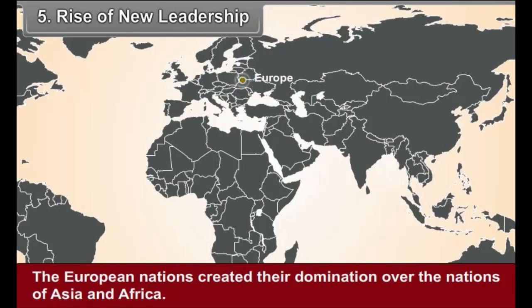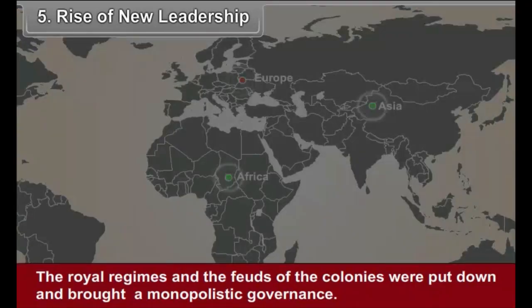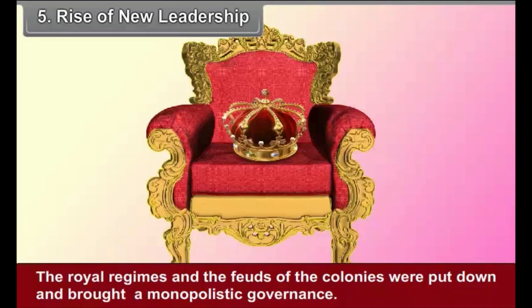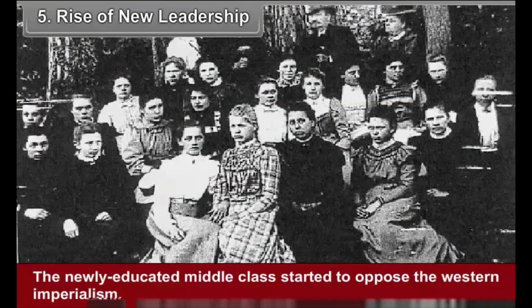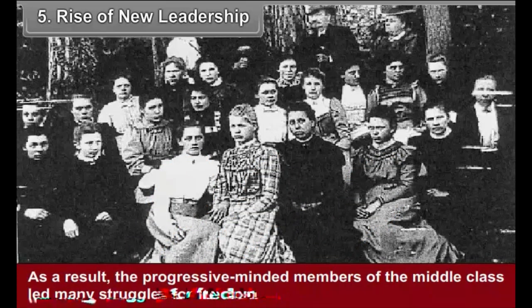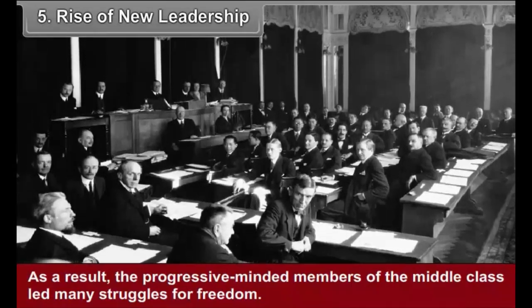Fifth, rise of new leadership: the European nations created domination over the nations of Asia and Africa. The royal regimes and feudal structures of the colonies were put down, bringing monopolistic governance. However, the newly educated middle class started to oppose Western imperialism, and as a result, progressive-minded members of the middle class led many struggles for freedom.